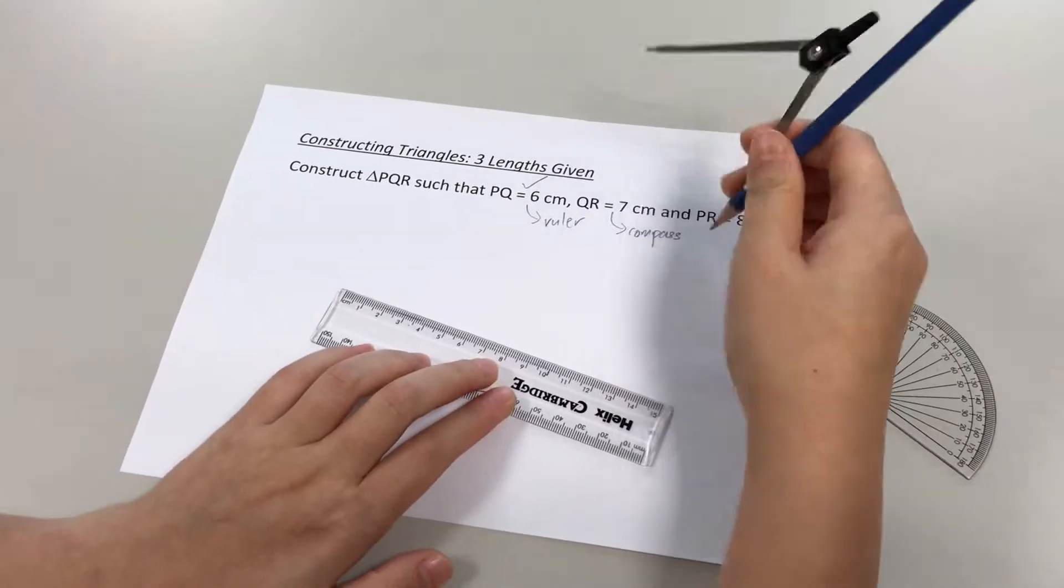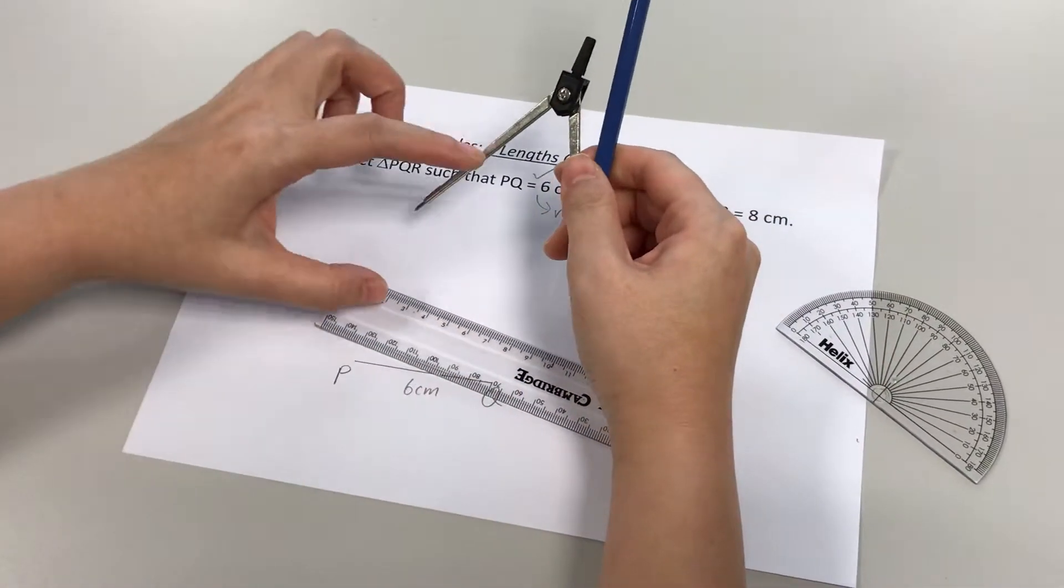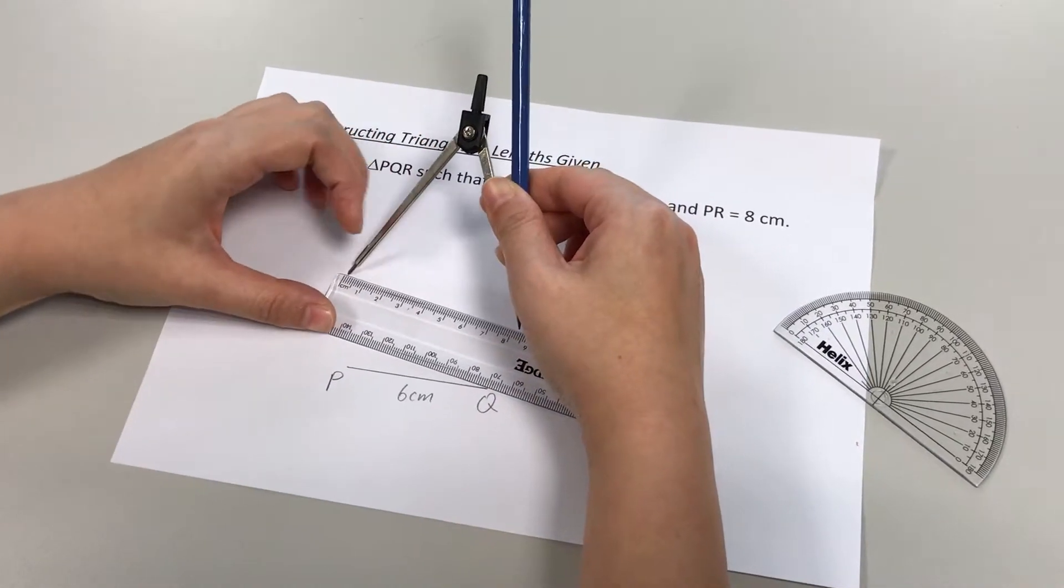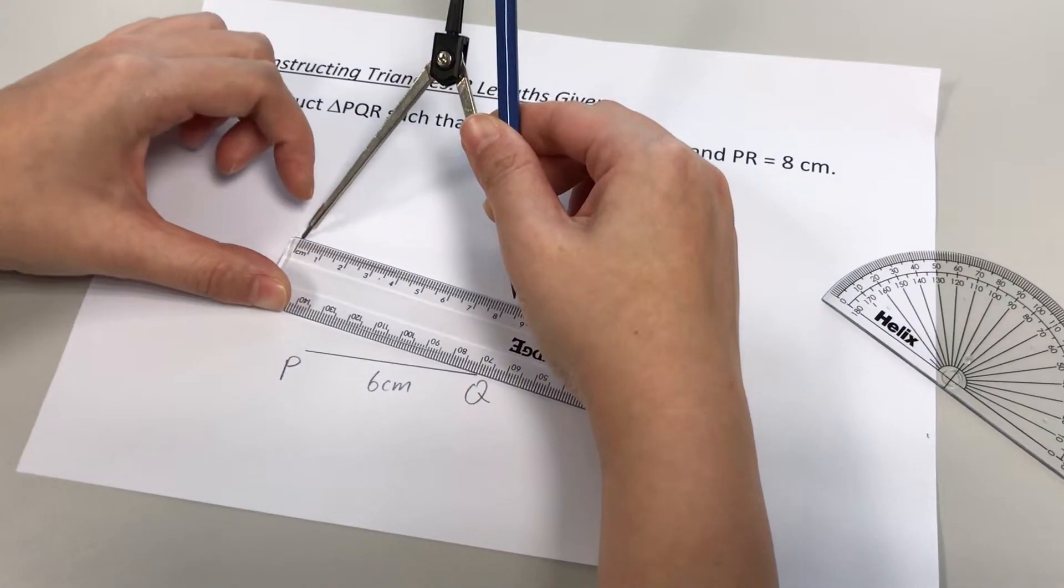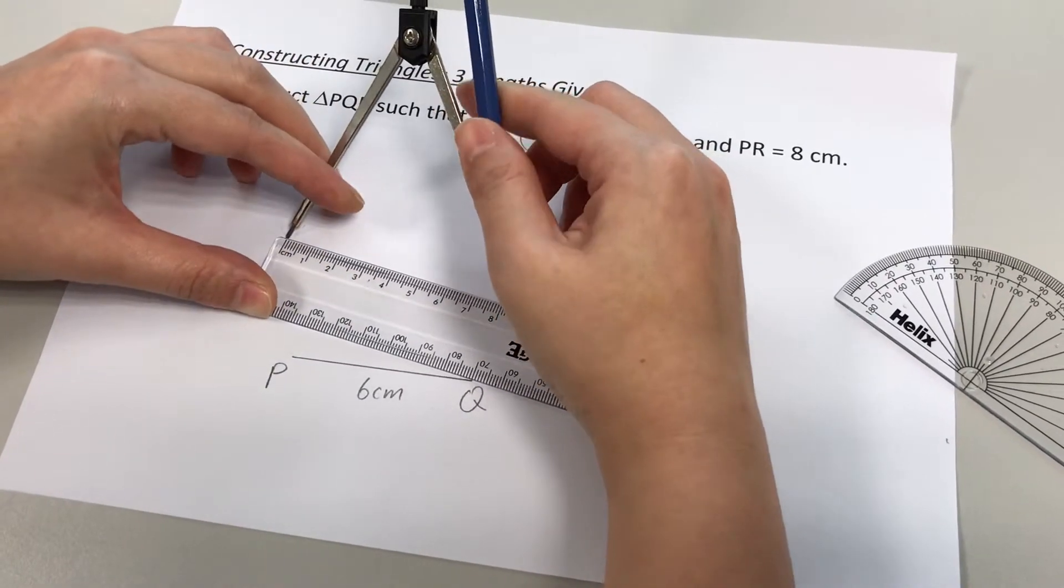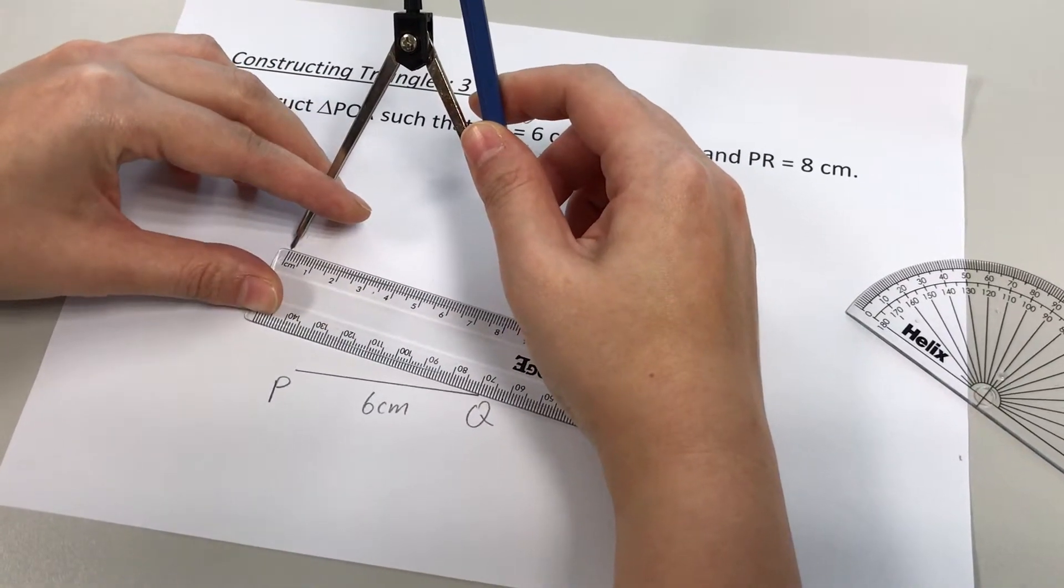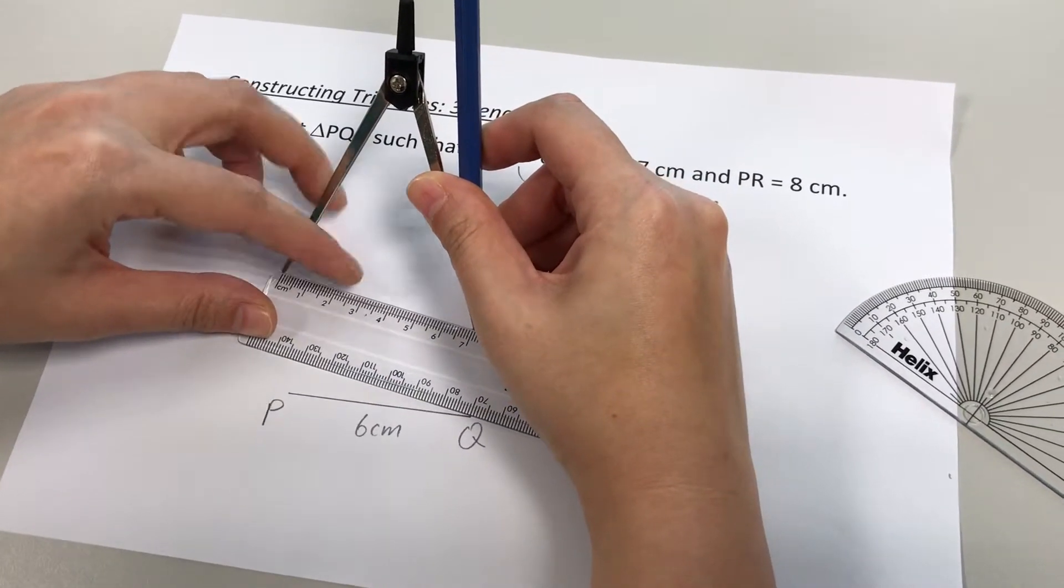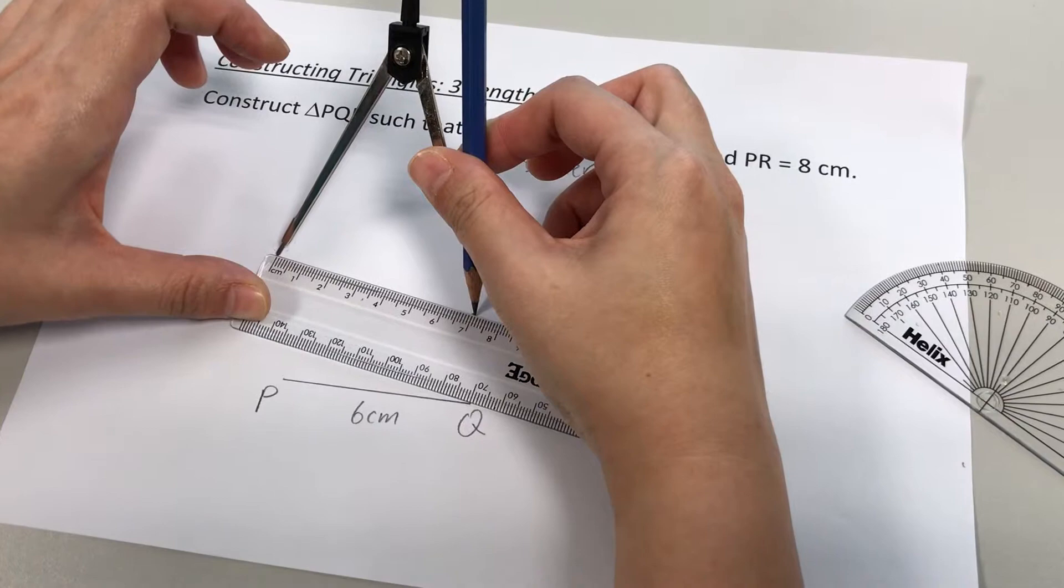Okay, so first step in using a compass, open the compass to the length given, which is 7cm here. So make sure you place the needle at the right spot, which is starting at 0, not starting at 1. All right, and we move it to 7cm. All right, like this, 7cm.